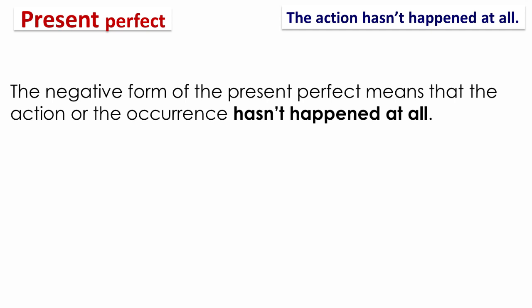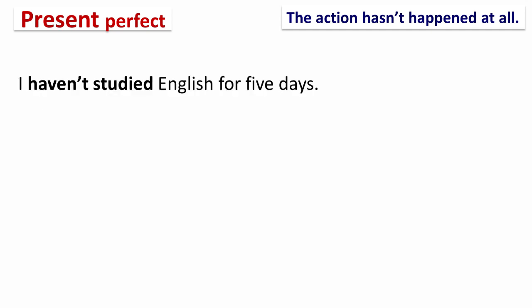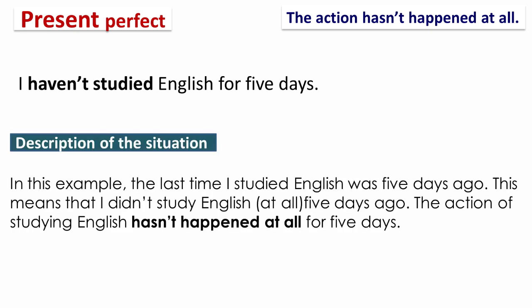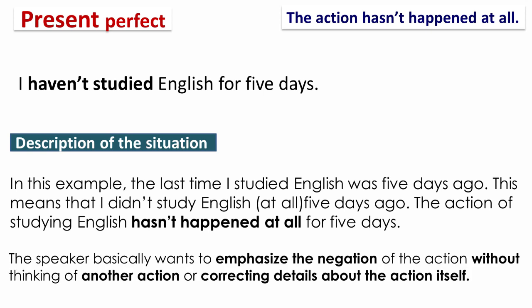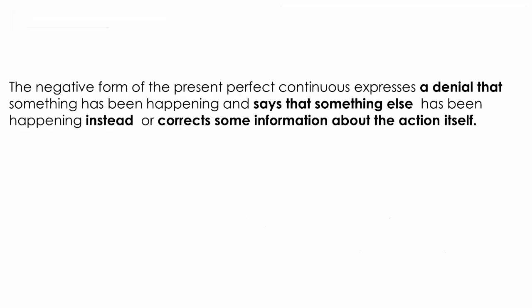For example: 'I haven't studied English for five days.' In this example, the last time I studied English was five days ago — I didn't study English at all during those five days. The action of studying English hasn't happened at all for five days. The speaker basically wants to emphasize the negation of the action, without thinking of another action or correcting details about the action itself.